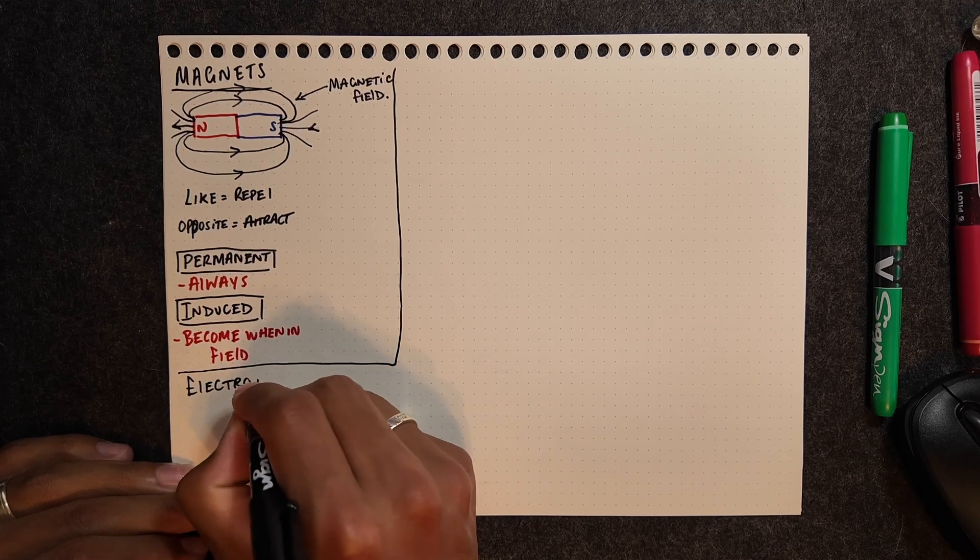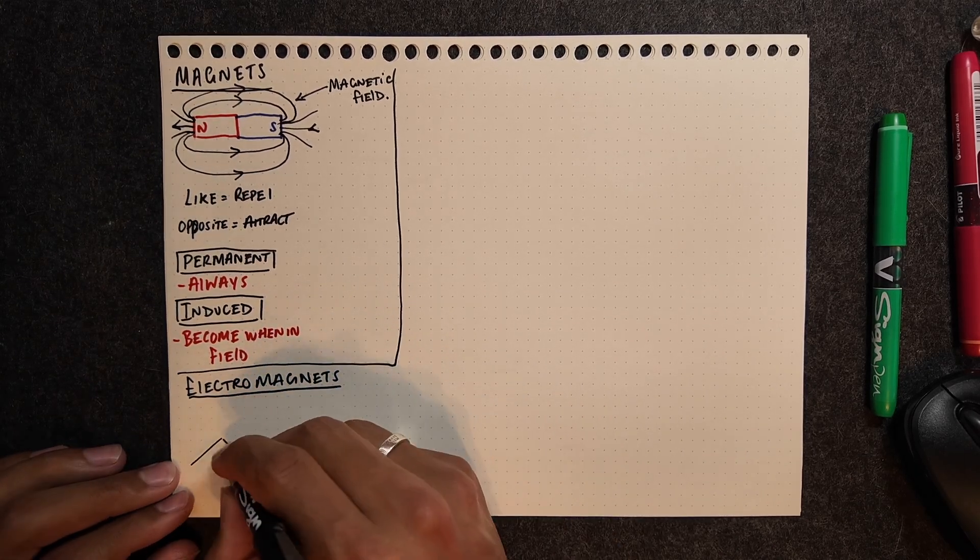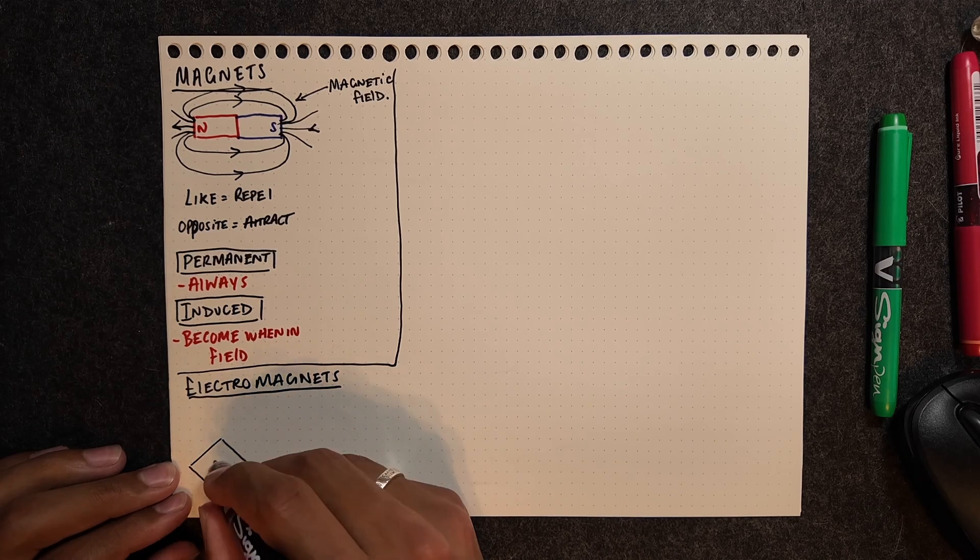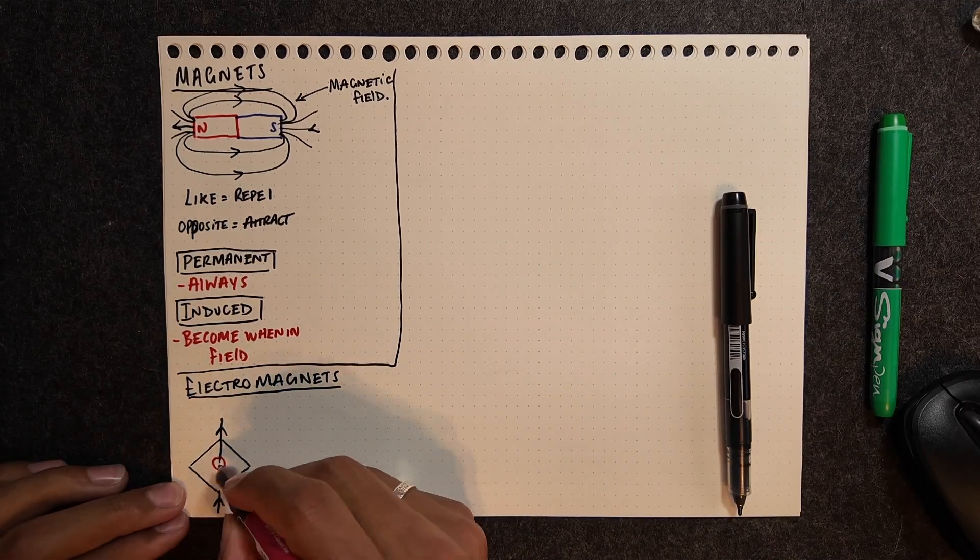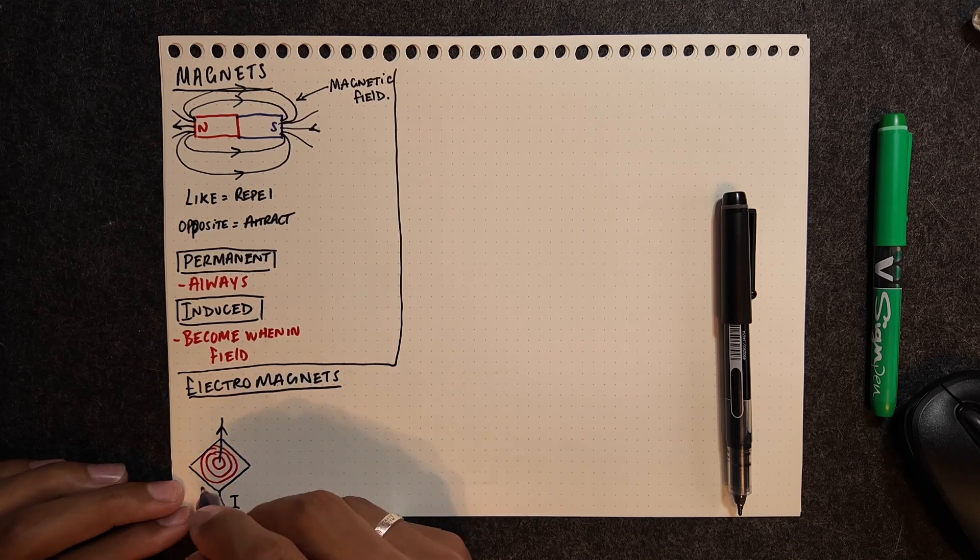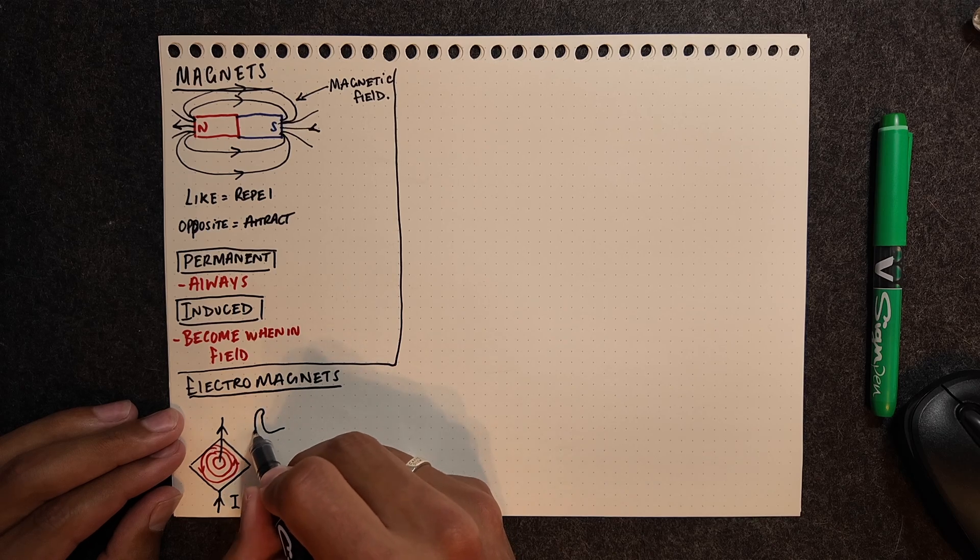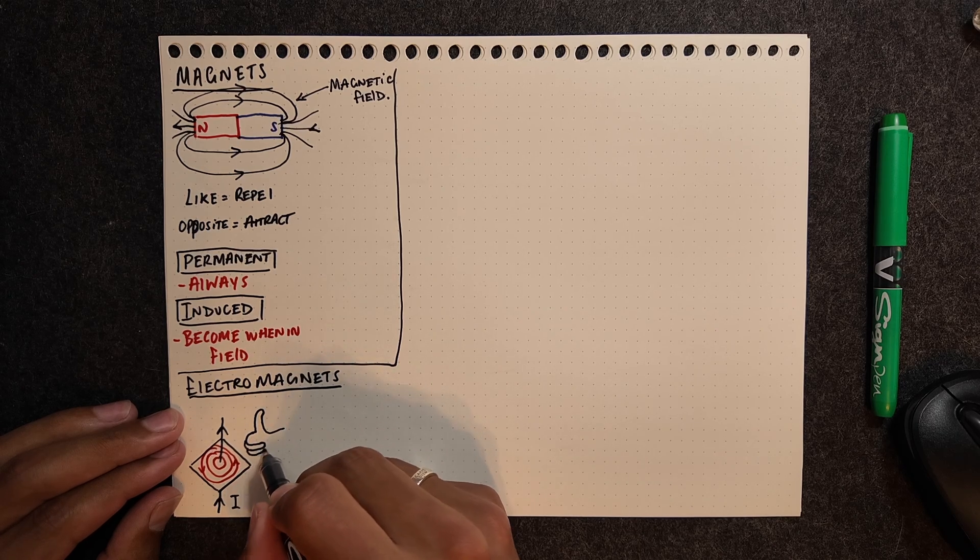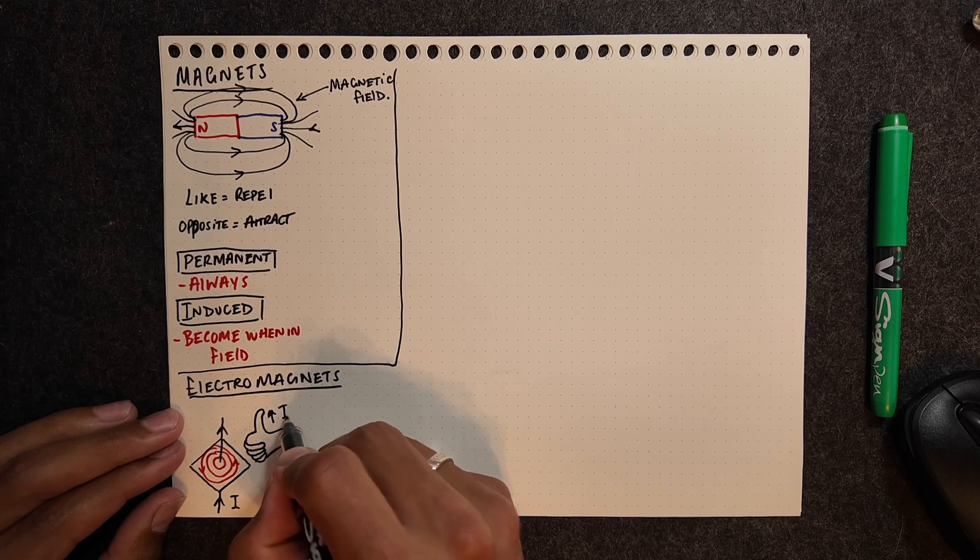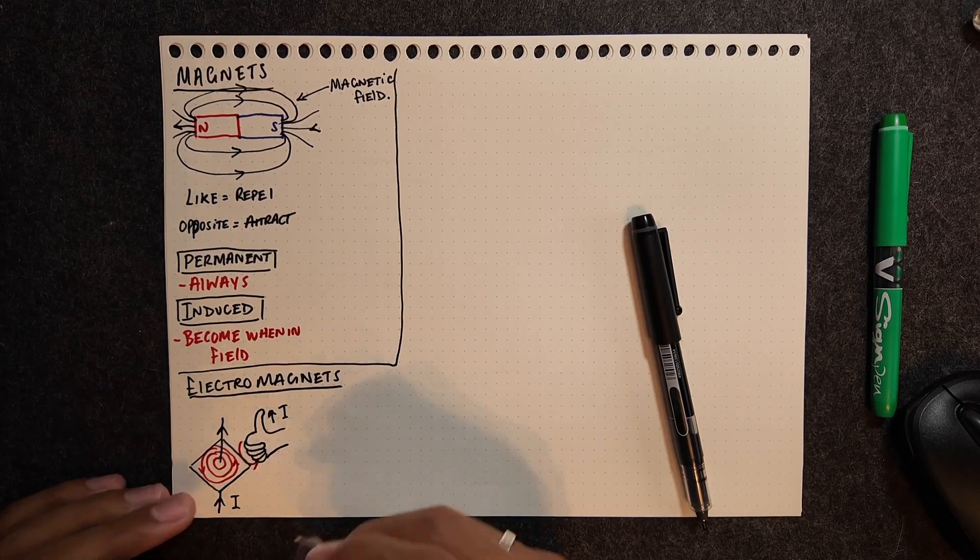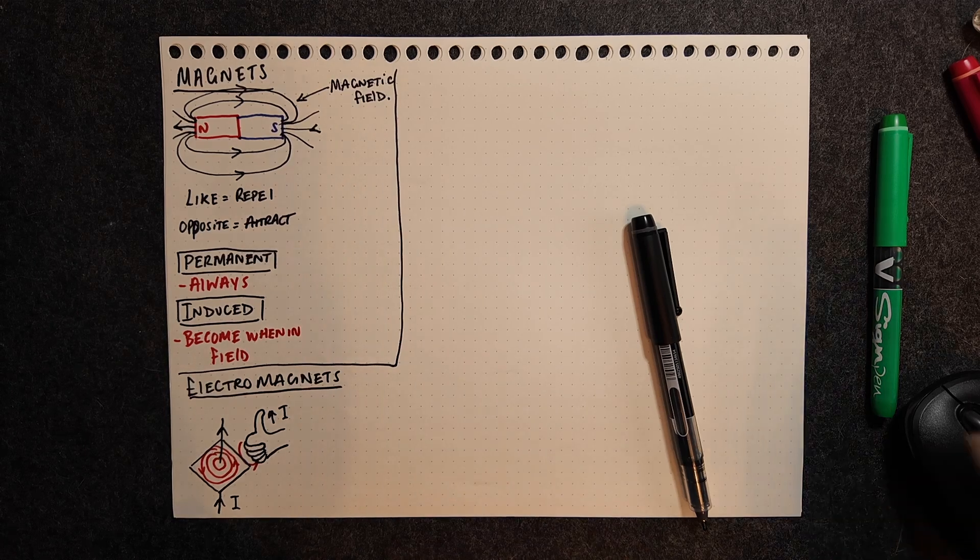The final bit that's to do with magnets is electromagnets. Electromagnets are created by passing an electric current through a wire. So when we do pass a current I through a wire, we're going to get a magnetic field around that. We can use our right-hand rule there to work out the direction of that. The thumb representing the flow of current, and then the fingers curling around anti-clockwise to represent the magnetic field.